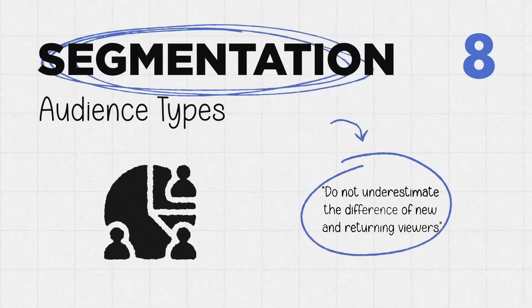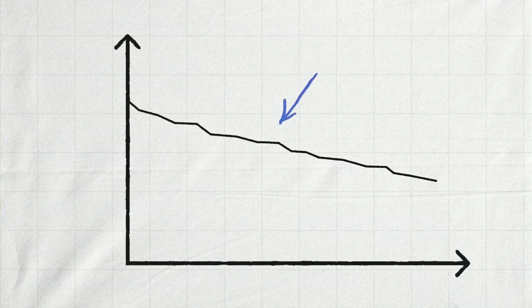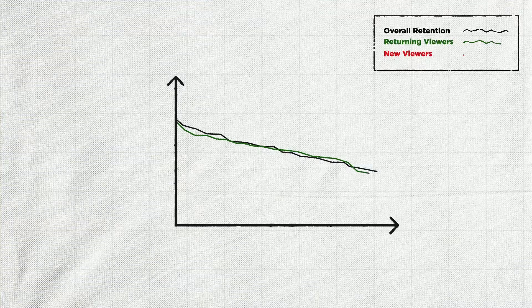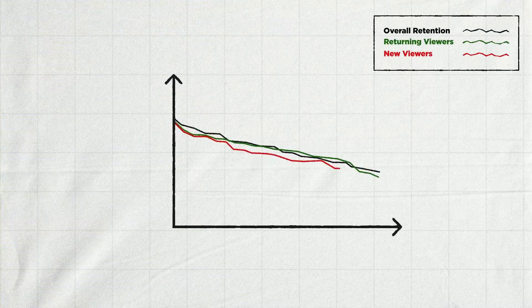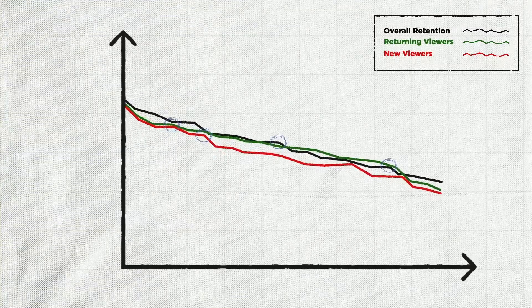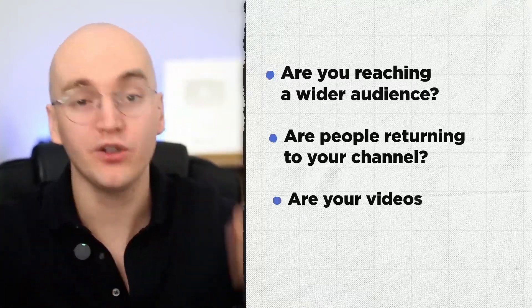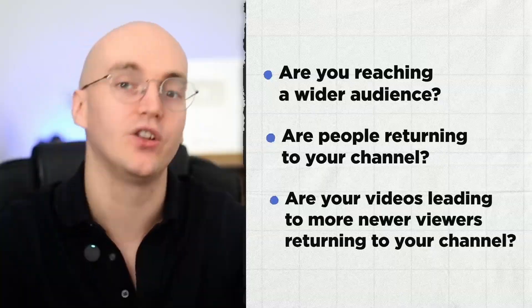Do not underestimate the difference between new and returning viewers. In YouTube analytics, you can segment your audience — even within retention charts — by new and returning viewers. This is a newer feature: your overall retention might look one way, but returning viewers watch very similarly to that, while new viewers could respond quite differently. Break down your retention chart this way, and also assess: are you reaching a wider audience? Are people returning to your channel? Are your videos leading newer viewers to return? These data points are often overlooked but can be incredibly valuable.